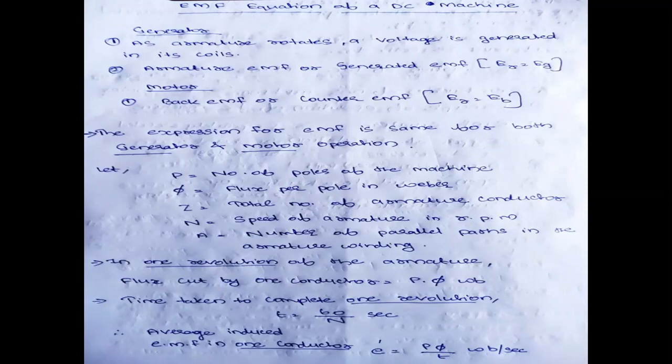In a generator there is an armature. As the armature rotates, a voltage is generated in its coils. The armature sits between the north pole and south pole, and when it rotates between the field coils, EMF is induced — that is the armature EMF or generated EMF. We denote that EMF by EG, and in a motor it will be a back EMF or counter EMF, denoted by EB. The expression for both is the same, and now we are going to derive the EMF equation of a DC machine.